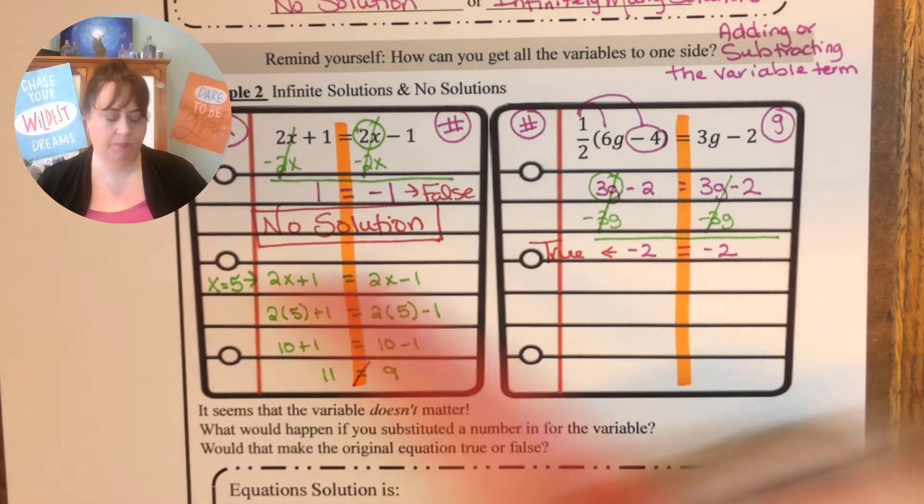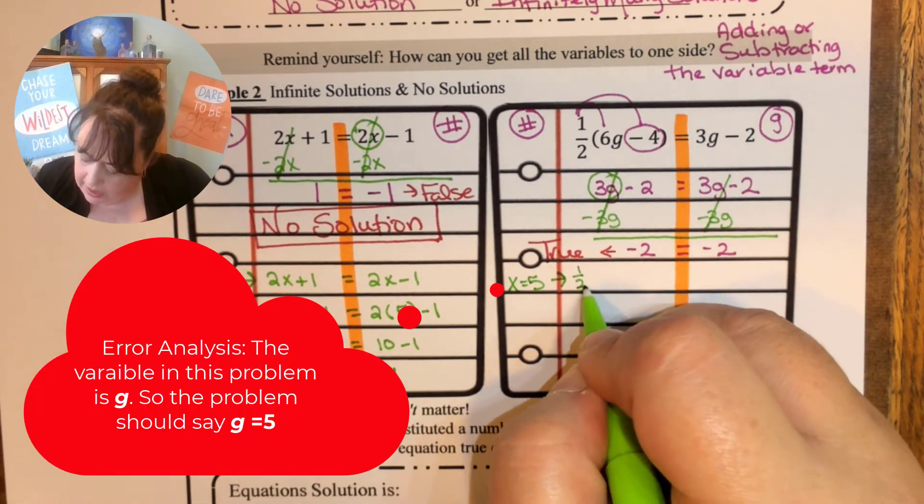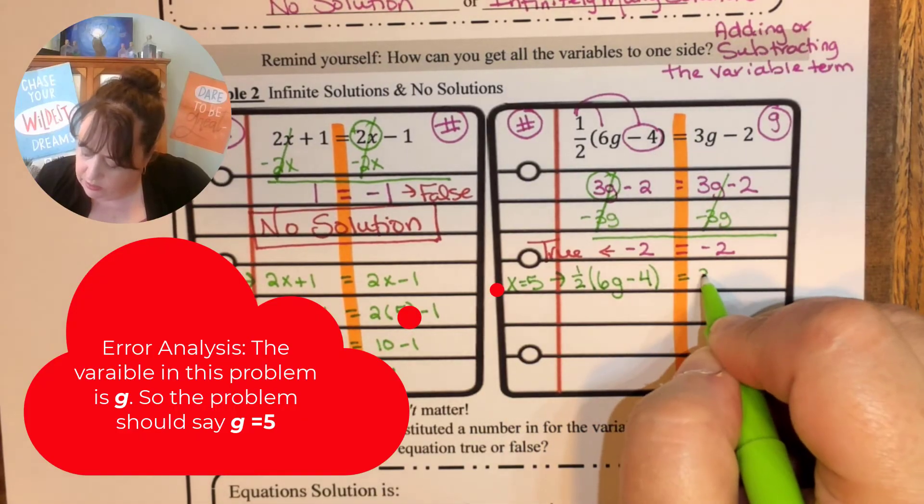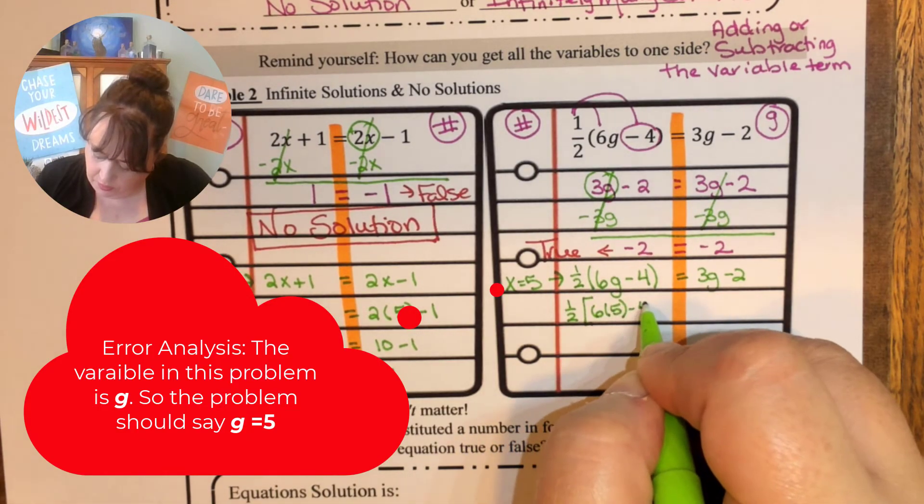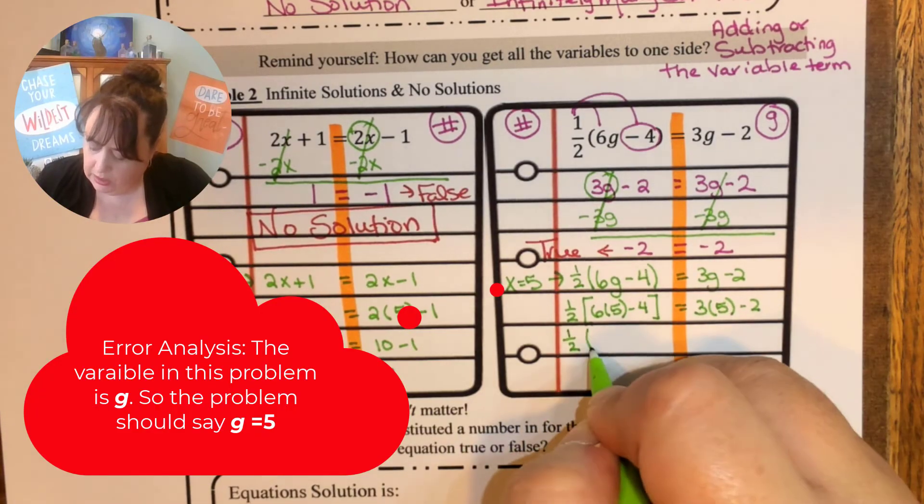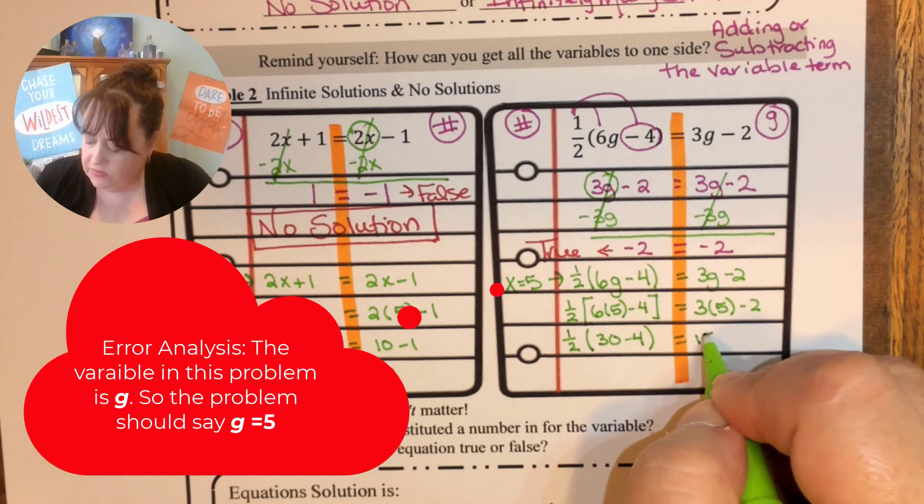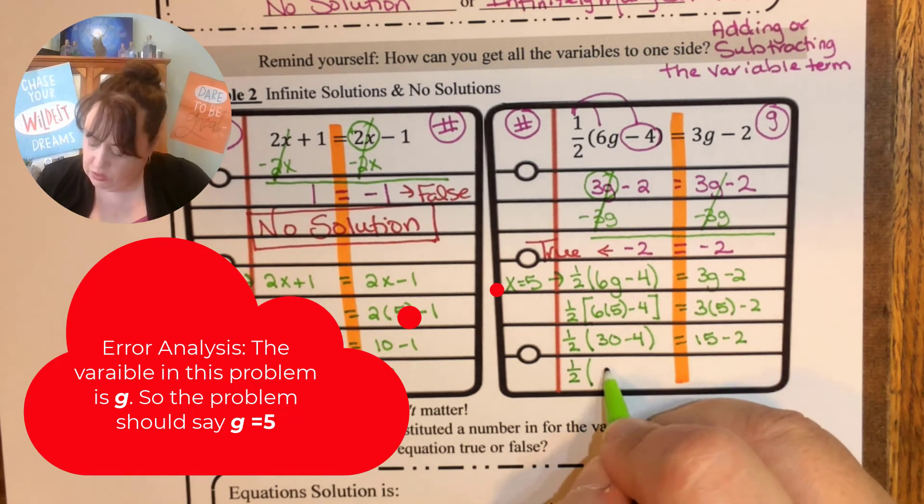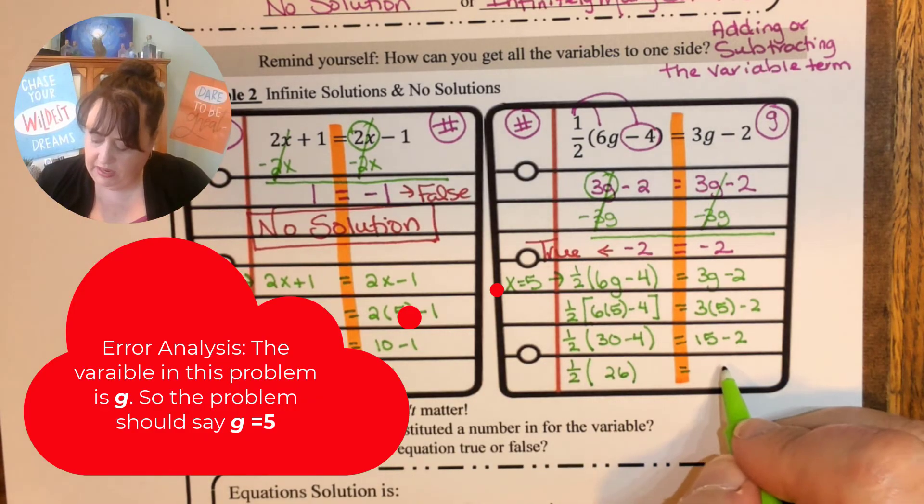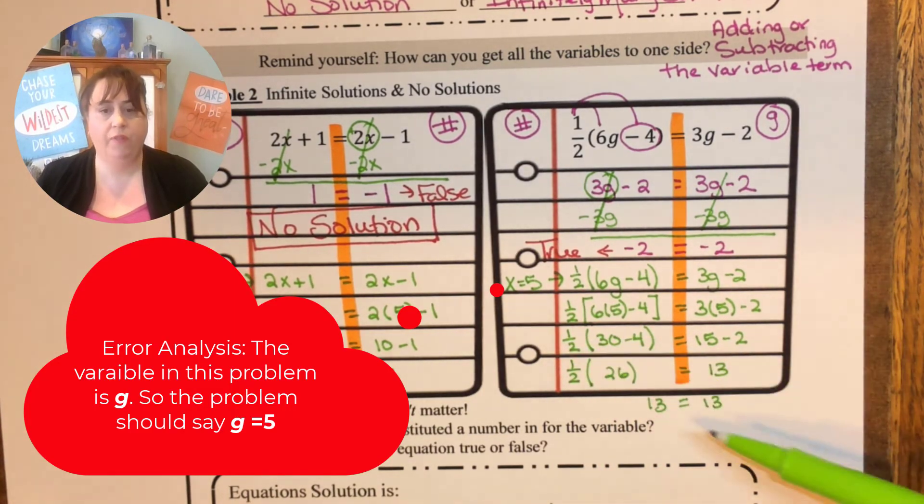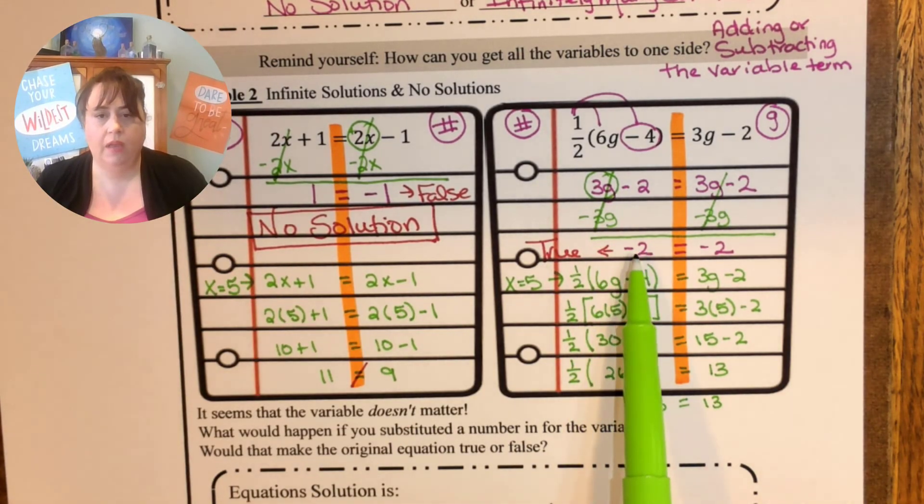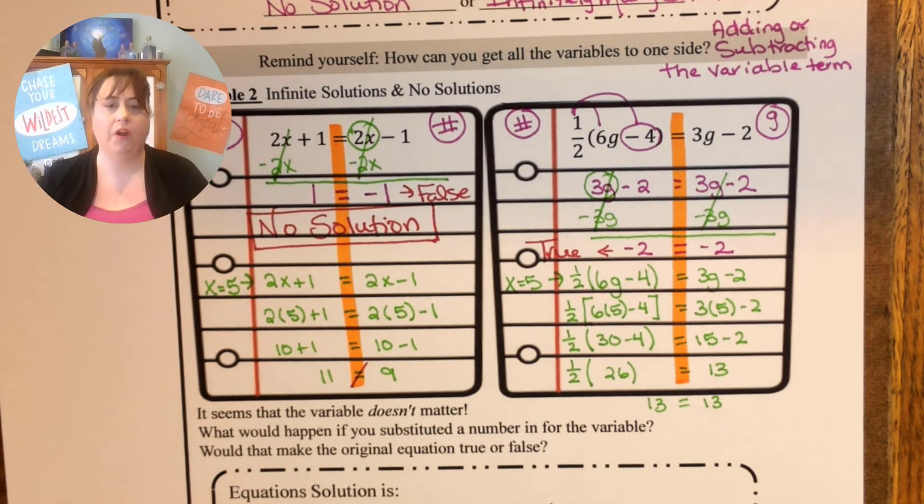So let's look at this one here. I'm going to still use x equals 5. I'm going to put it into one half of 6g minus 4 equals 3g minus 2. So one half of 6 times 5 minus 4 equals 3 times 5 minus 2. So one half of 30 minus 4 equals 15 minus 2. So 30 minus 4 is 26. 15 minus 2 is 13. One half of 26 is 13. 13 equals 13. Look at that. 5 worked. Look at this though. It's not going to matter what I put in there. Negative 2 equals negative 2. It's always going to work because the variable doesn't matter because it always works every single time.